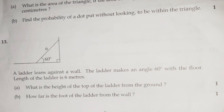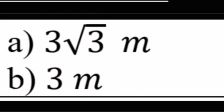Question 13: A ladder leans against a wall. The ladder makes an angle 60 degrees with the floor. Length of the ladder is 6 meters. A: What is the height of the top of the ladder from the ground? B: How far is the foot of the ladder from the wall? Answer A: 3 root 3 meters. Answer B: 3 meters.